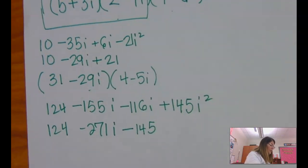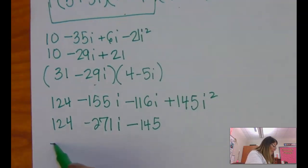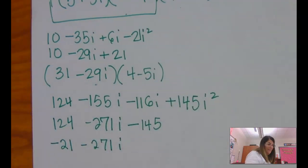So part of the trick is you have to put the constant term, the real term, first. So this is going to be negative 21 minus 271i.